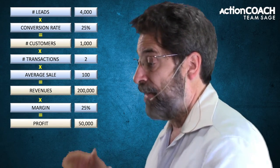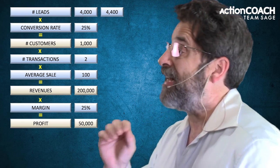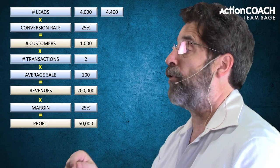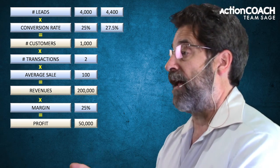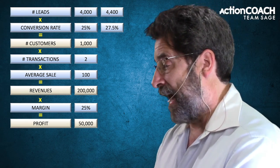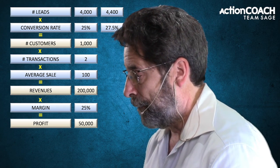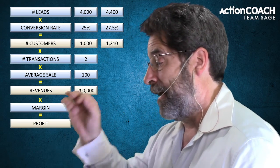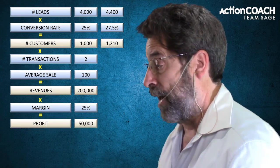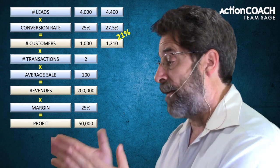Why is this important? It's important because when we start to increase these numbers, because they're multiplied together, it makes a huge difference. So what if we only increase them by 10%? If I take my 4,000 leads and increase by 10%, that gives me 4,400. If I take my conversion rate of 25% and increase by 10%, I get 27.5%. Multiplying 4,400 leads by 27.5% conversion gives me 1,210 customers — that's a 21% increase in customers, not just 10%, because they're multiplied together.